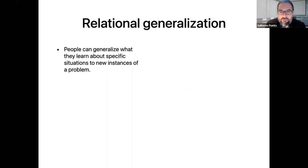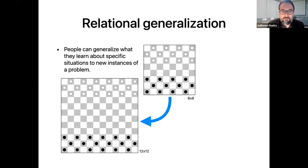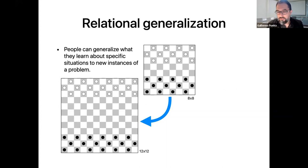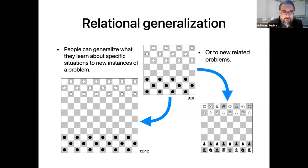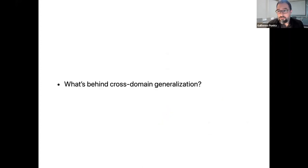People can generalize what they learn about specific instances of a problem to new instances of the same problem. For example, if a person learns to play checkers on a standard 8x8 board, she can easily play the game on a 12x12 board. We can also go beyond task-specific generalizations and use what we have learned about one problem when facing different problems — for example, a person using what they learn about checkers when playing chess. This kind of generalization based on deep structural similarities is known as cross-domain generalization. So the question is: what's behind this kind of generalization?